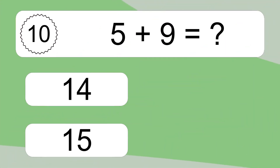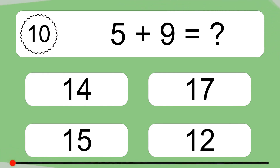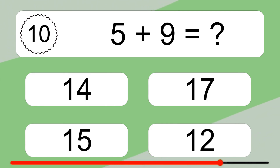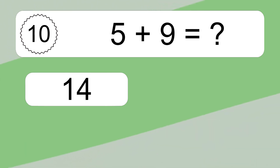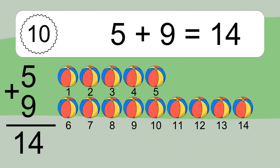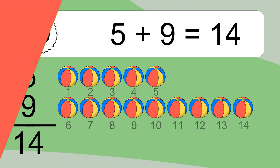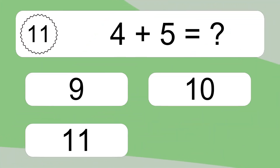5 plus 9 equals what? 5 plus 9 equals 14. Let's count it: 1, 2, 3, 4, 5, 6, 7, 8, 9, 10, 11, 12, 13, 14.